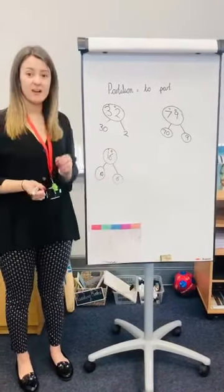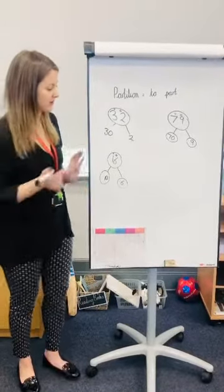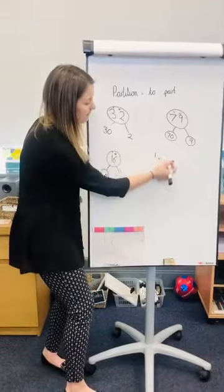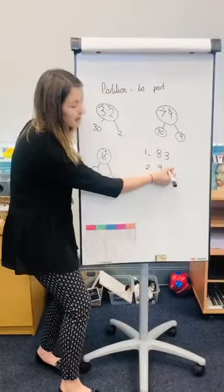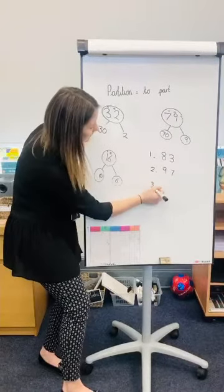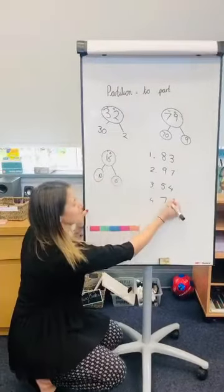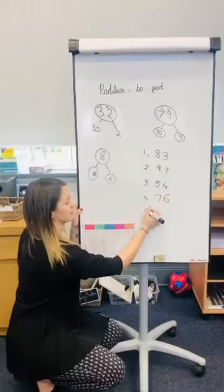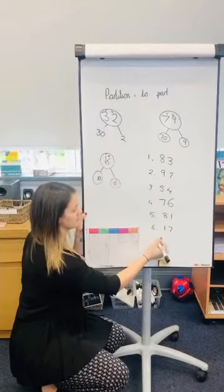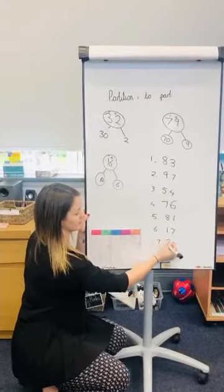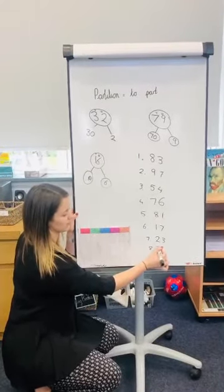Okay, I'm going to write some numbers on the board now and I'd like you to have a little go at partitioning them into tens and ones. So we're going to go for 83, 97, 54, 76, 81, 17, 23, and 52.